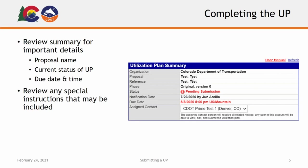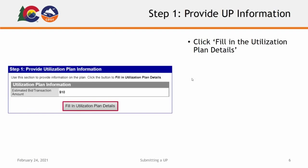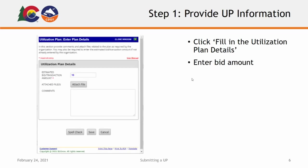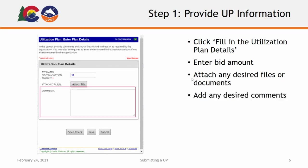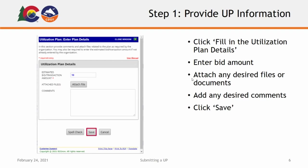This is also where you will find any additional special instructions that may apply to completing your utilization plan. After reviewing this information, you can proceed to Step 1 of the utilization plan. Step 1 is where you will provide the details of your bid. First, click the Fill in Utilization Plan Details button. Next, you will enter your bid amount. You can also attach any files or documents you may wish to include, such as a copy of your proposal documents or other bid-related documents. You are also able to add any comments here, but these are not required. To finish Step 1, click Save to be taken back to the Utilization Plan page and continue to Step 2.